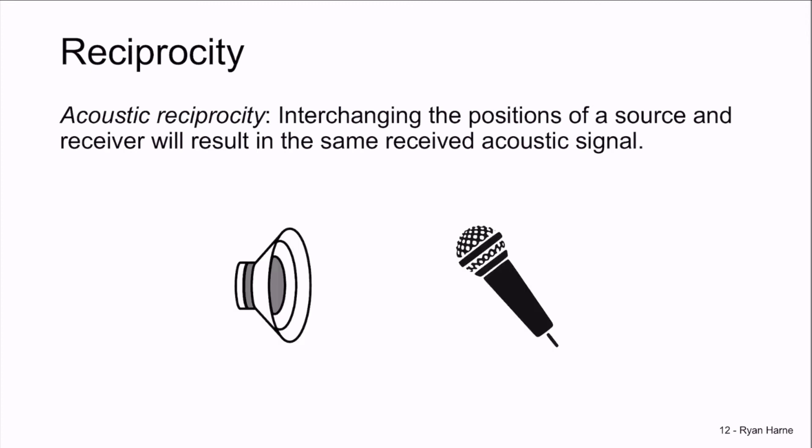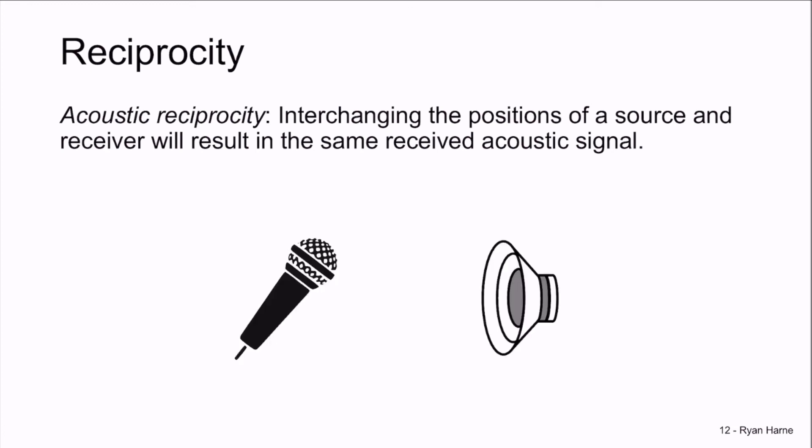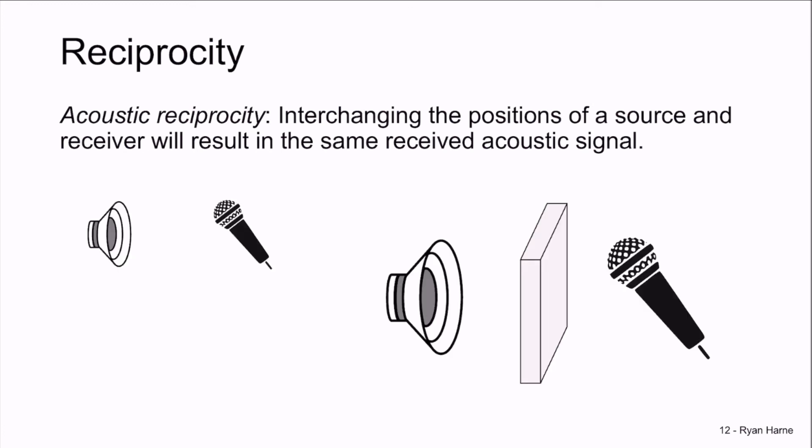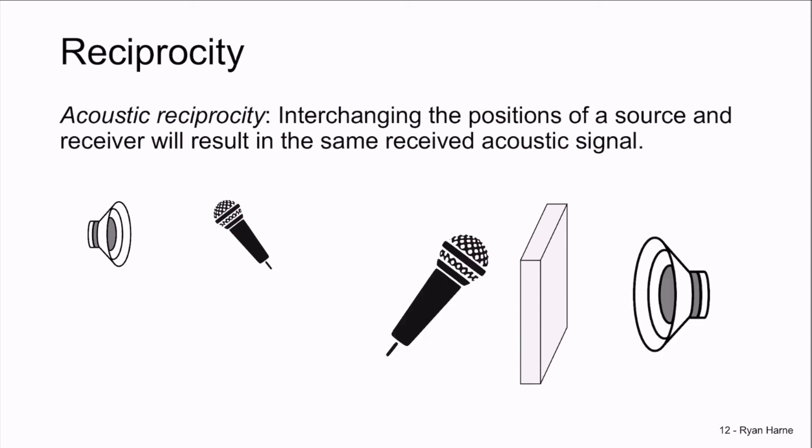What this means, of course, is that if we have a speaker generating sound and a microphone receiving it, if we just change the positions of microphone and speaker, we'll measure the same sound with the microphone. This also occurs if there is a barrier in between us or something in between us. If we change the positions, the same microphone signal will occur.